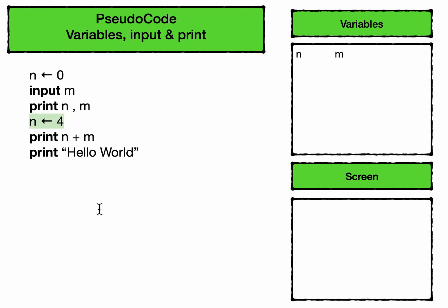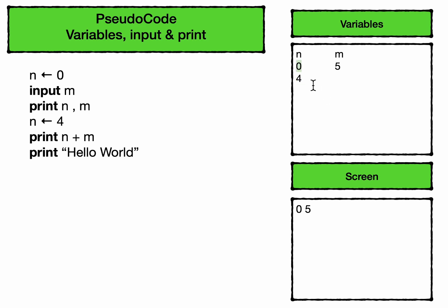I've inserted a new line n arrow four — let's see what happens to the code. The first line will do the same as before and n will be given the value zero. The next line will again wait for someone to type in a number. Let's assume this time they typed in the number five. Print n and m will print to the screen and we will get zero and five. The next line says n is assigned the value of four, so n now has the number four in it. It's important to realize this value of zero no longer exists anymore — n can only store one number at a time.